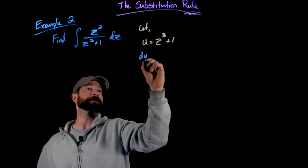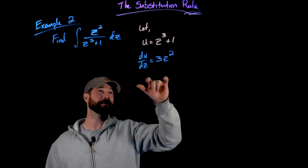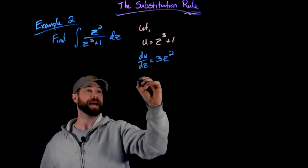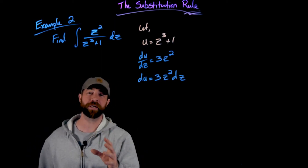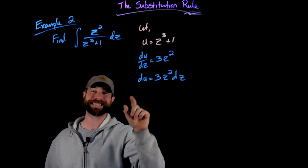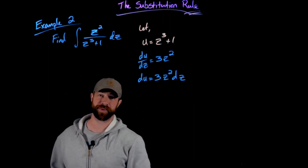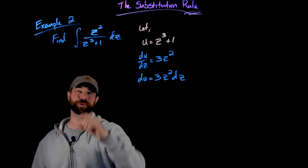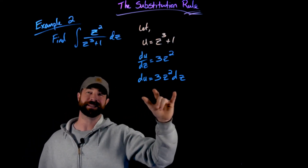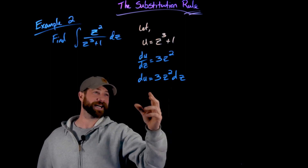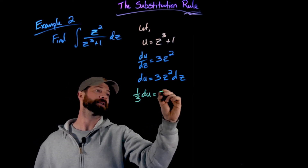With constant coefficients I can move them in and outside of the integral, so as long as I'm close within a constant factor, I'll be fine. I let u equal z cubed plus 1. Taking the derivative with respect to z gives du/dz equals 3z squared. Multiplying both sides by dz gives du equals 3z squared dz. Since I only have z squared and dz, I divide both sides by 3 to get one-third du equals z squared dz.